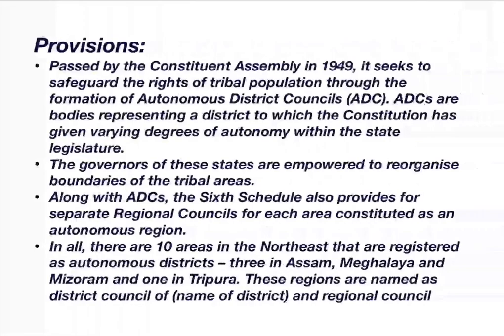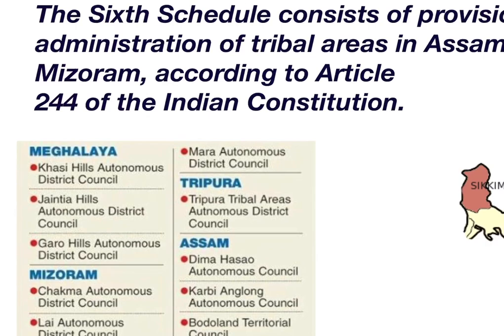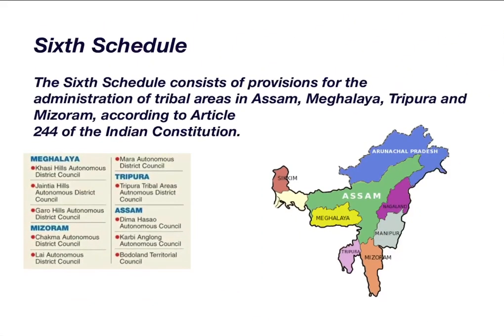The areas which come under autonomous district councils are decided by the governor of that state. For example, the governor of Assam is empowered to reorganize the boundaries of tribal areas. Apart from autonomous district councils, the Sixth Schedule also provides for regional councils. There are mainly ten such areas across the four states — three autonomous district councils in Meghalaya, three in Mizoram, three in Assam, and one in Tripura.